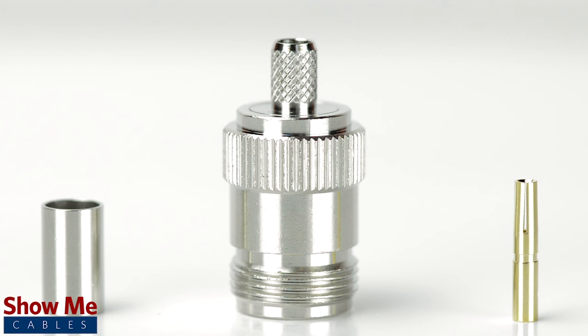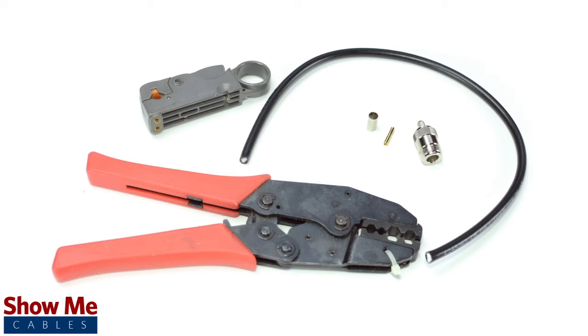The 3 piece connector consists of the connector housing, a ferrule, and the female pin. For this installation you will need RG8AU or RG213U, a strip tool, a crimp tool, and the crimp connector.